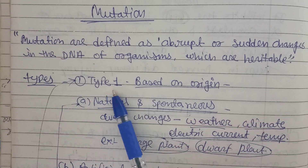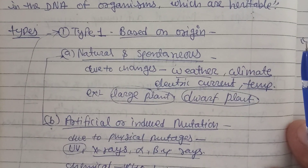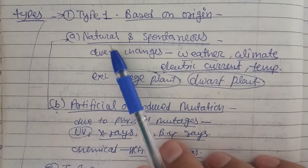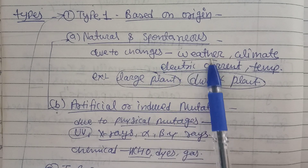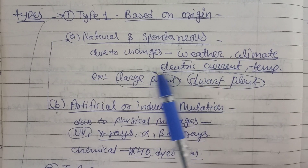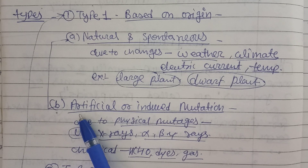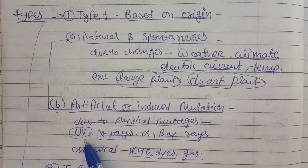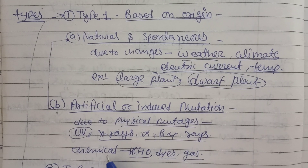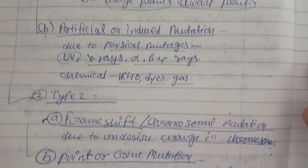There are different types of mutation. Type one is based on origin, which has two subtypes: natural and spontaneous mutation, and artificial or induced mutation. Natural and spontaneous mutations occur due to changes in weather, climate, electric current, or temperature — altering the DNA. This can happen in large plants or dwarf plants. Artificial or induced mutation is caused by physical agents like UV rays, X-rays, alpha, beta, or gamma rays, or chemicals like formaldehyde, dyes, or gases.